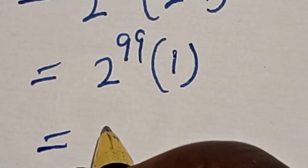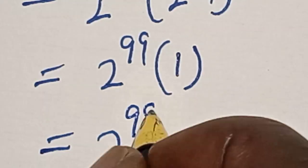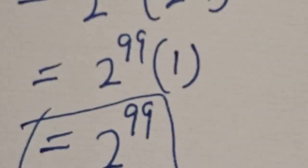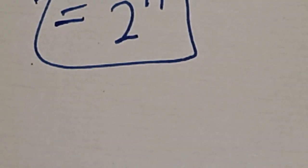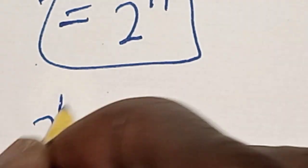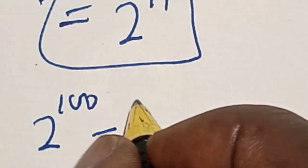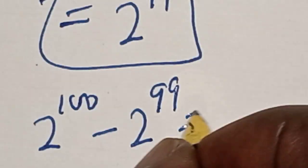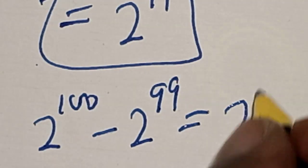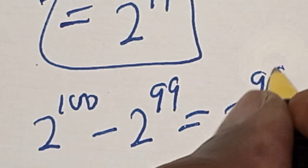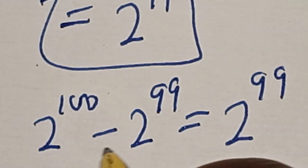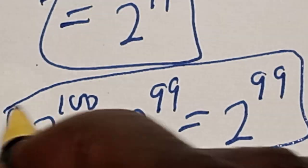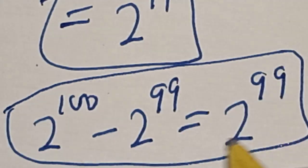Therefore, 2 raised to power 100 minus 2 raised to power 99 is equal to 2 raised to power 99. That is our answer. Before you leave, like, share, comment and subscribe. Thank you, bye bye.